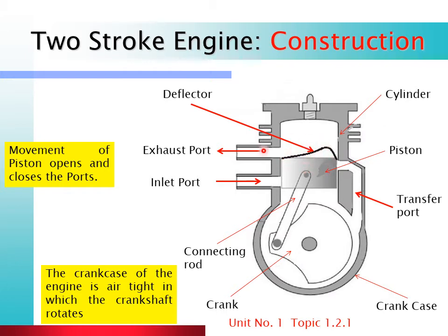Another important difference between the 4-stroke and 2-stroke engine is the piston shape. In the 2-stroke engine, the top of the piston is shaped like a deflector — it has a dome or deflector on it. In the 4-stroke petrol or diesel engine, the piston crown is flat. This deflector shape is a key construction feature of the 2-stroke engine.